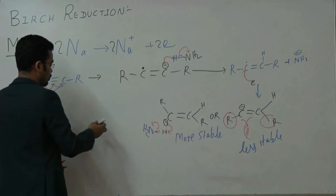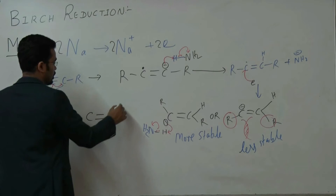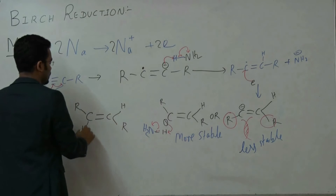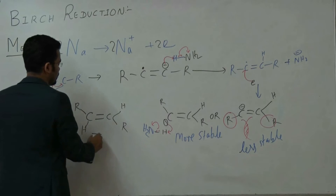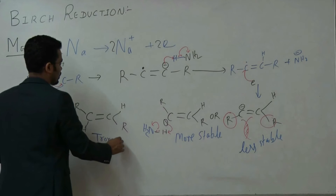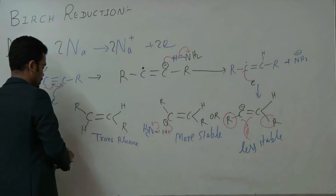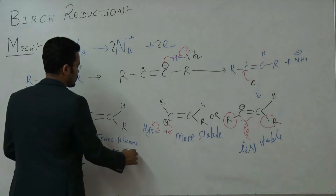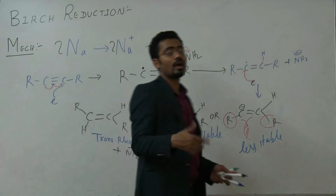The H from ammonia is attacked by the negative charge — this bonded electron moves towards NH2 — and the overall compound that forms will be C=C with H and R on opposite sides and H and R, which is the trans alkene. Along with this, sodium amide (NH2⁻ + Na⁺) also forms — two moles of sodium amide.